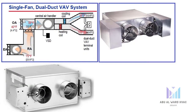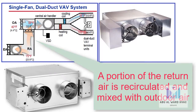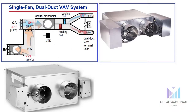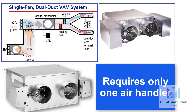First, the single fan dual duct VAV system configuration. At the single air handler, a portion of the return air is recirculated and mixed with outdoor air. This mixture of outdoor and recirculated return air is then diverted through either the cooling coil or the heating coil, and delivered down the respective duct system to the dual duct VAV terminal units. While this single fan configuration requires only one air handler, it is very complicated to control effectively.